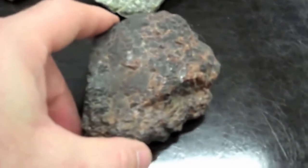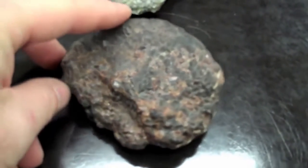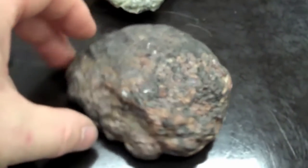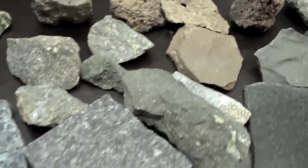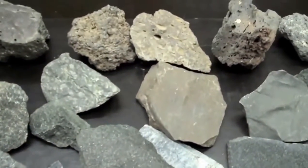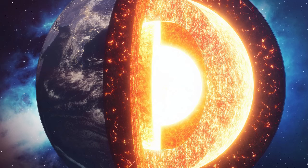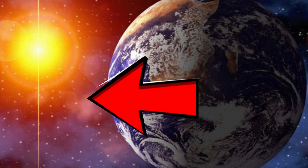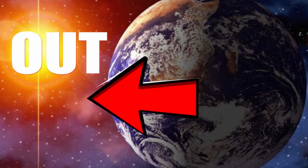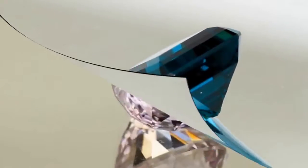Intrusive igneous rocks are formed beneath the surface of the earth. Extrusive igneous rocks are formed on the surface of the earth. The difference is: 'in' means inside the earth, and 'ex' means exiting — formed outside of the earth.